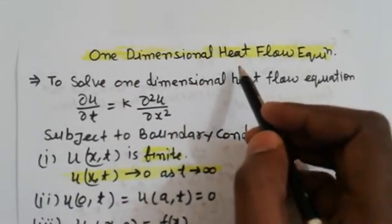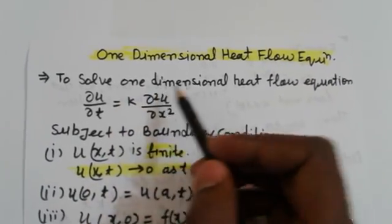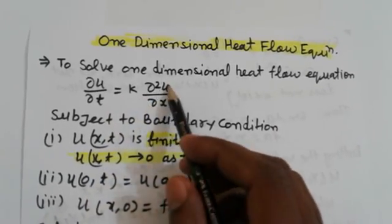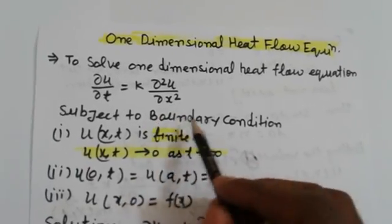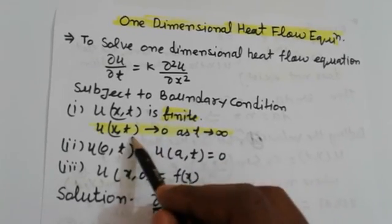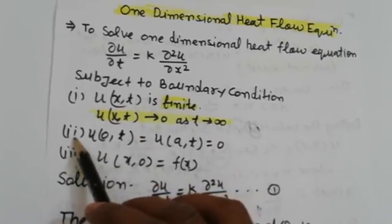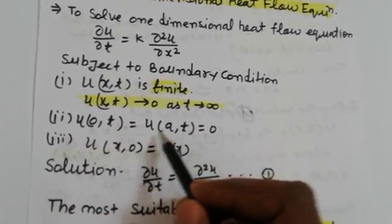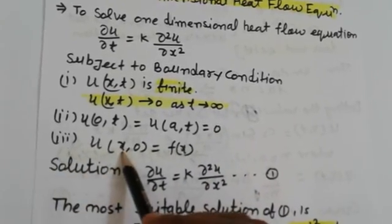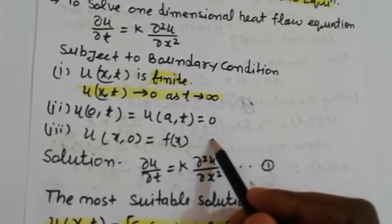We solve the one-dimensional heat flow equation: ∂u/∂t = k ∂²u/∂x². The boundary conditions are: (1) u(x,t) is finite, and u(x,t) → 0 as t → ∞; (2) u(0,t) = 0 and u(a,t) = 0; (3) u(x,0) = f(x), where f(x) is a function of x only.